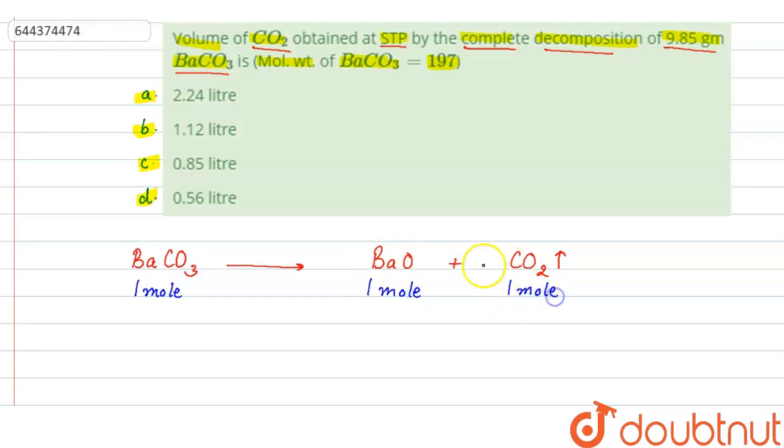Now here we are given 9.85 gram, so we will convert this 9.85 gram of barium carbonate into its moles. So here we have a formula of moles: number of moles is equal to given weight by molecular weight.